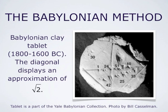This method was apparently known to the Babylonians. Here is a photograph taken by Bill Kasselman of a Babylonian clay tablet dated to 1800 or 1600 BC. The diagonal displays an approximation of √2, which was apparently computed numerically using this method — much earlier than Pythagoras, whose student found that √2 is not a rational number. So the Babylonians, almost 4,000 years ago, were already quite advanced in their mathematics.